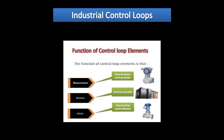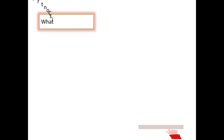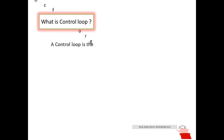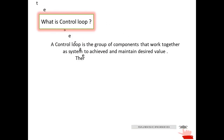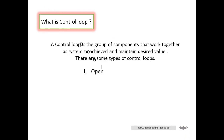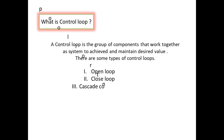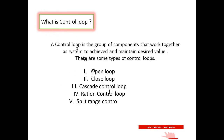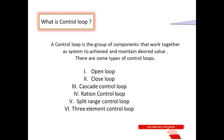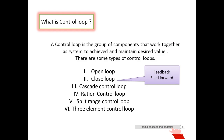Welcome to Instrumentation Knowledge. Today our topic is industrial control loops. A control loop is the group of components that work together as a system to achieve and maintain a desired value. There are some types of control loops: open loop, closed loop, cascade control loop, ratio control loop, split-range control loop, and three-element control loop.